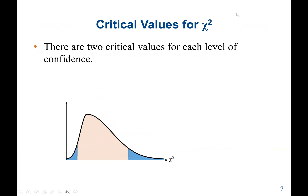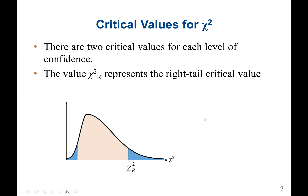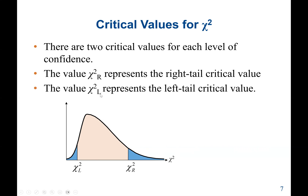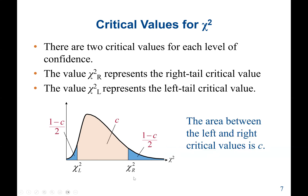In terms of the critical value for the chi-square, there are two critical values for each level of confidence. Chi-square R represents the right tail, and chi-square L represents the left tail. The area between the left and the right critical value is C. We have (1 minus C) over 2 to the left, and (1 minus C) divided by 2 to the right.